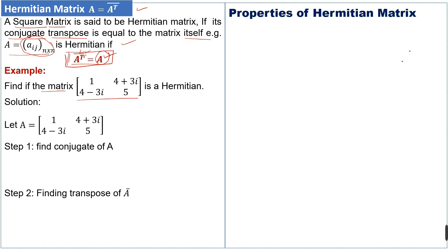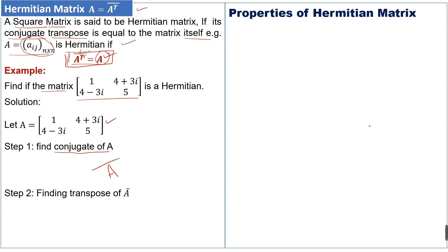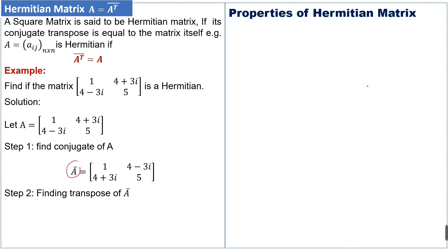For example, let A equal the given matrix. First we find the conjugate of matrix A. The conjugate is found by changing the sign of the imaginary part of each complex number. We can see that the plus sign changes to negative and the negative changes to plus. This result is the conjugate of matrix A. Now we will find the transpose of this conjugate matrix.